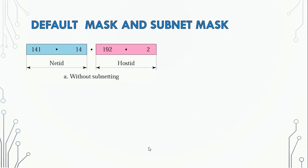When you look at subnetting, you can see two parts: the Network ID and the Host ID.